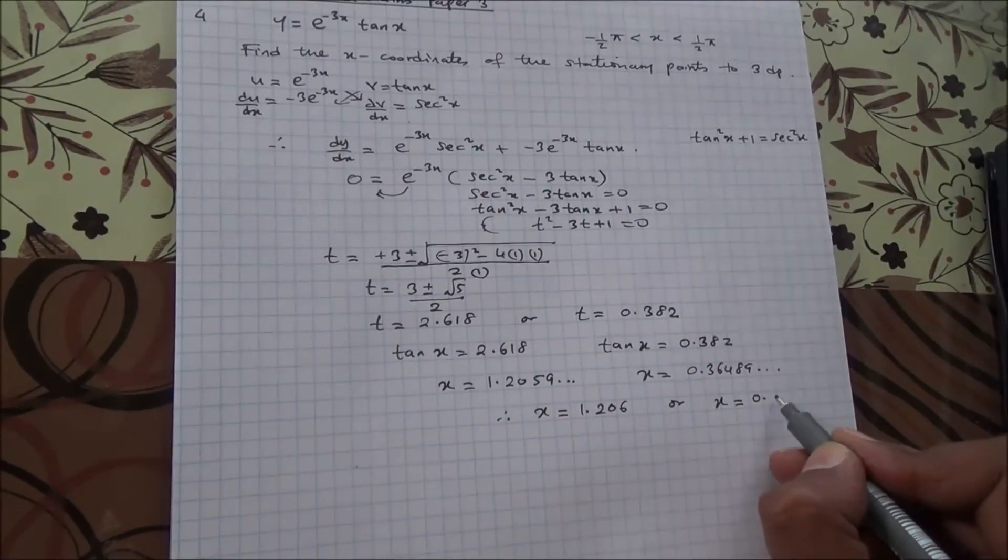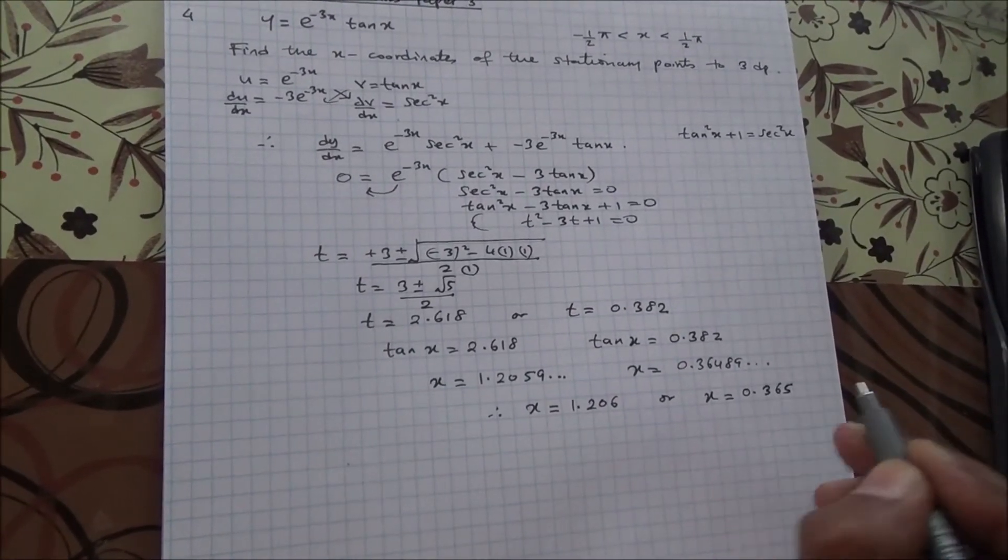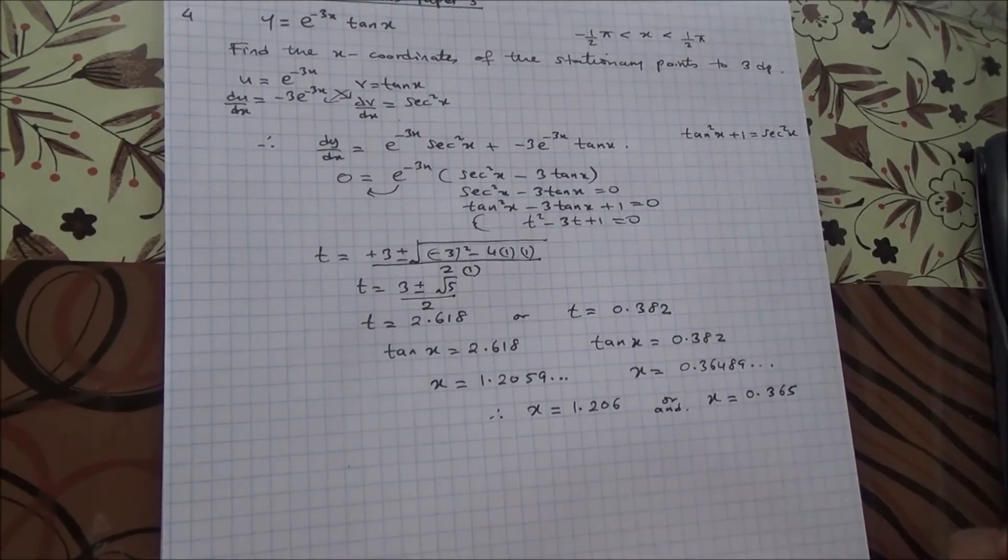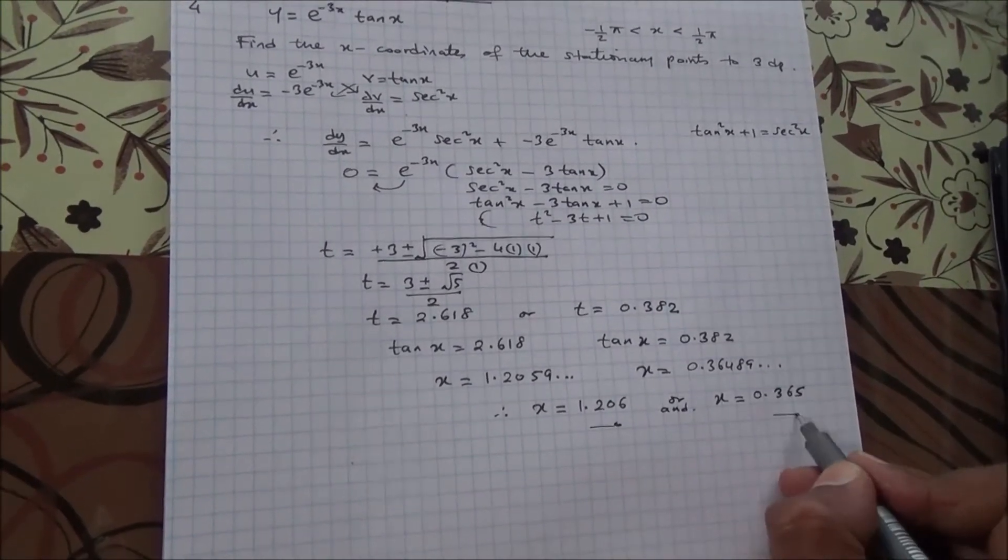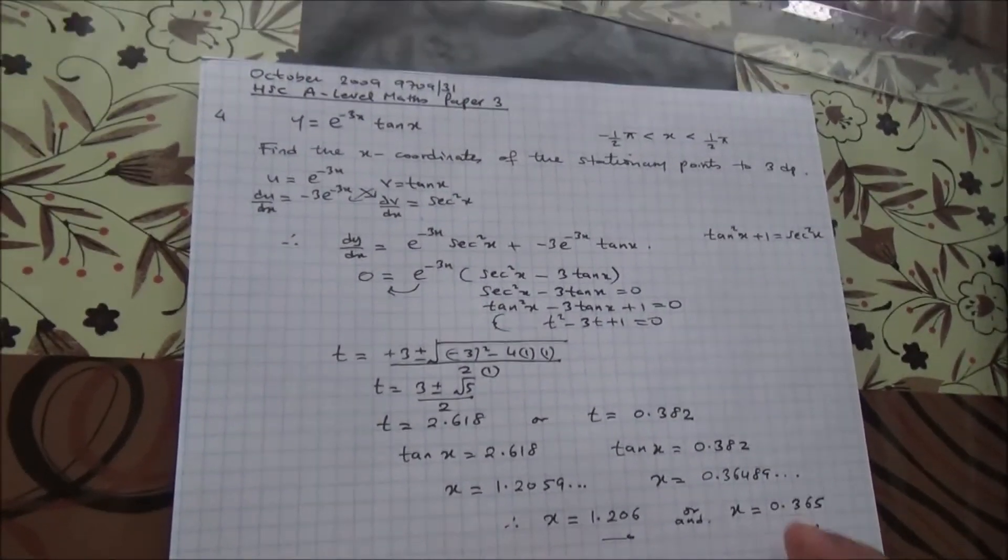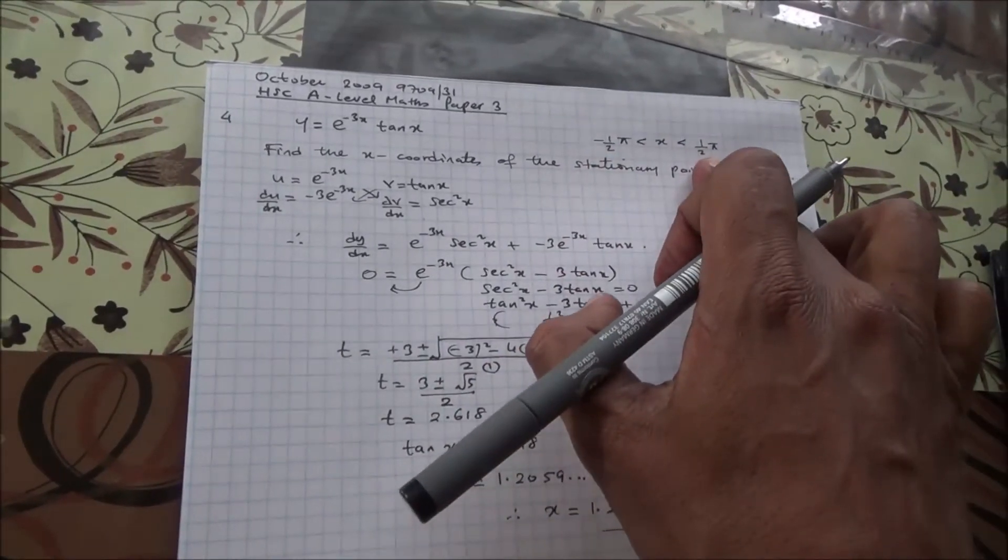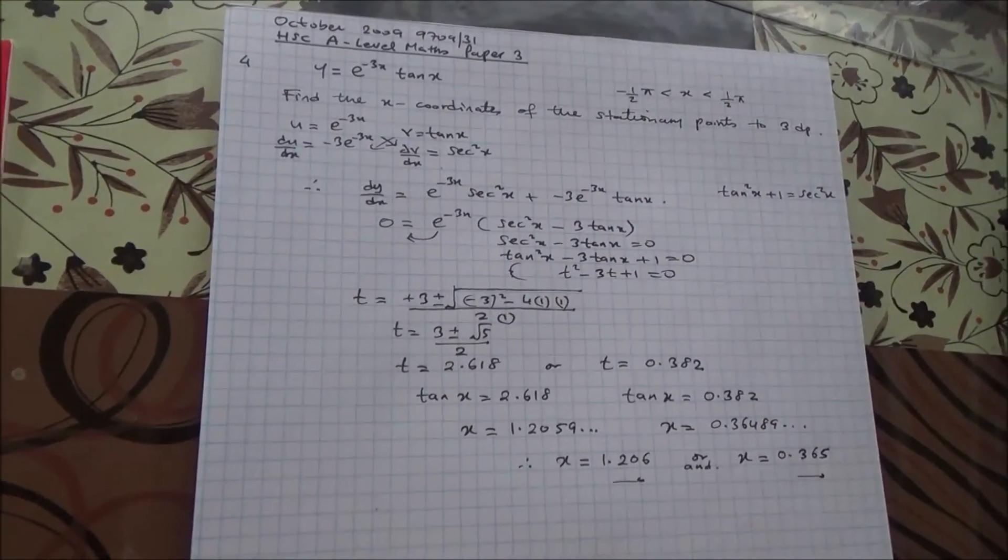Okay, so 0.365, let's write this, and so here we are, and these two are between the limits, minus half pi to half pi.